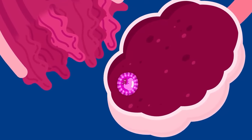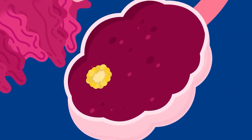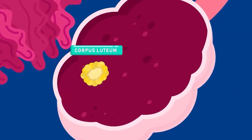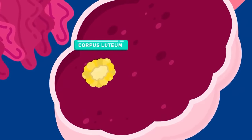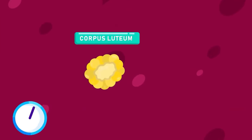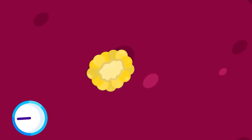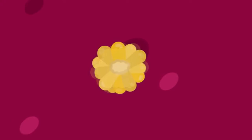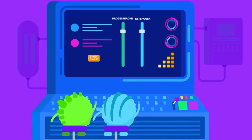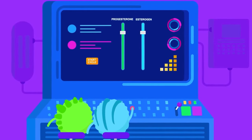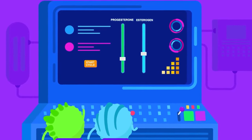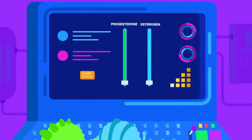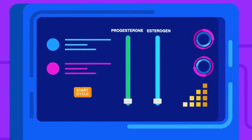After ovulation, the leftover follicle develops into the corpus luteum. The corpus luteum will persist for some time, and then break down. The production of hormones will be stopped, and the menstrual cycle will start over.